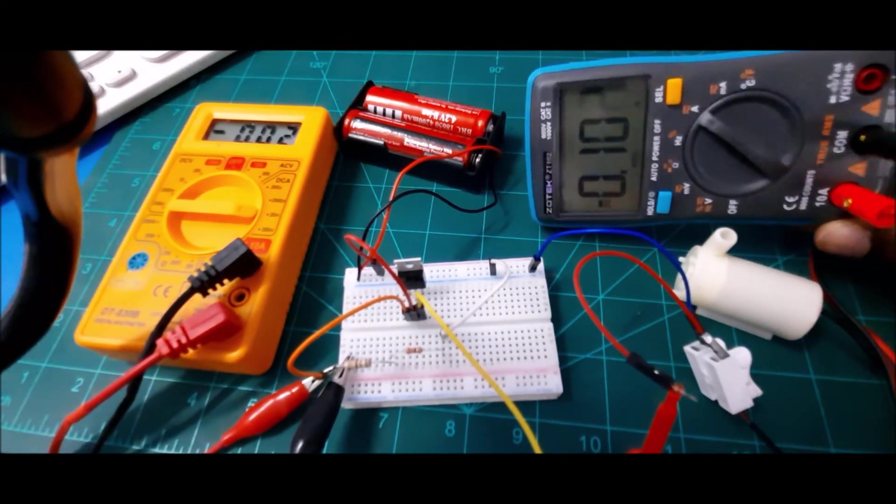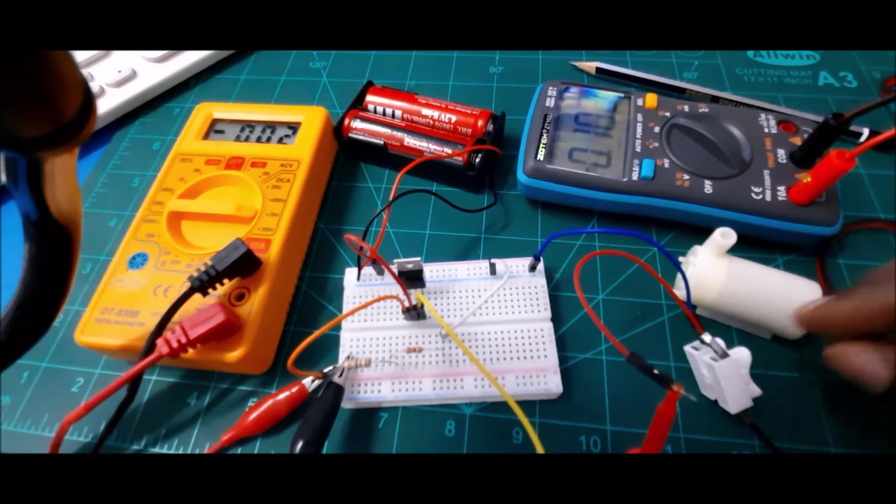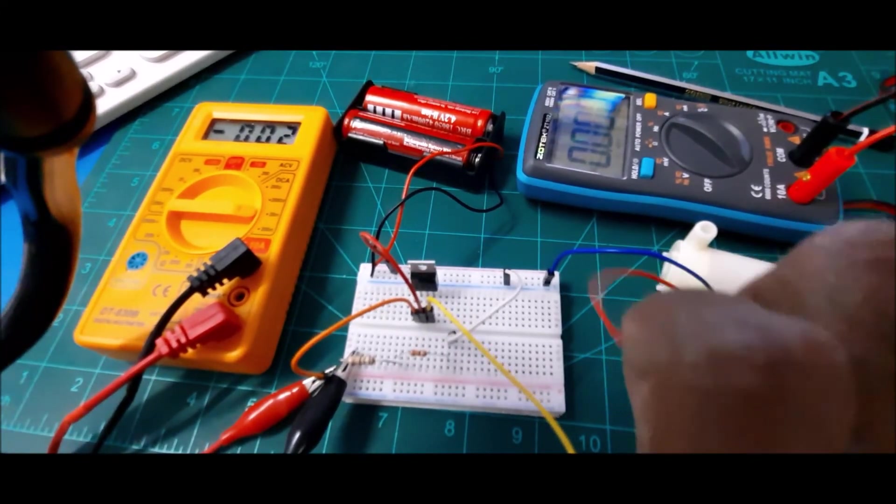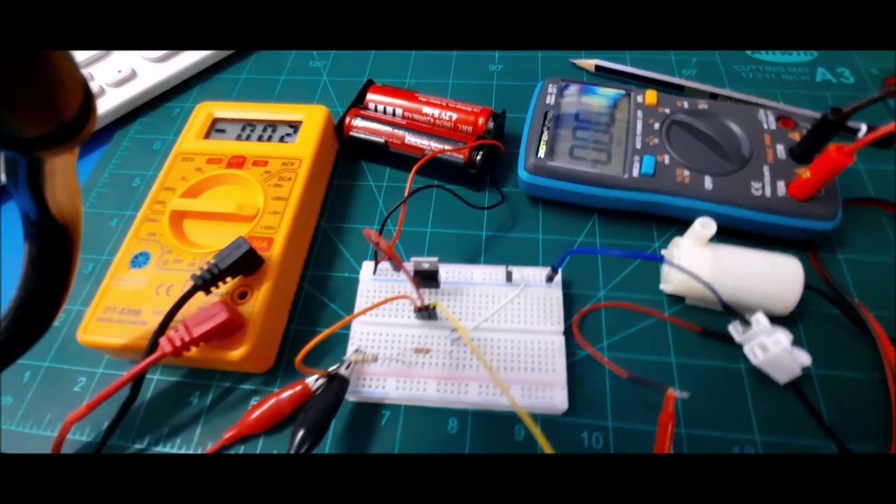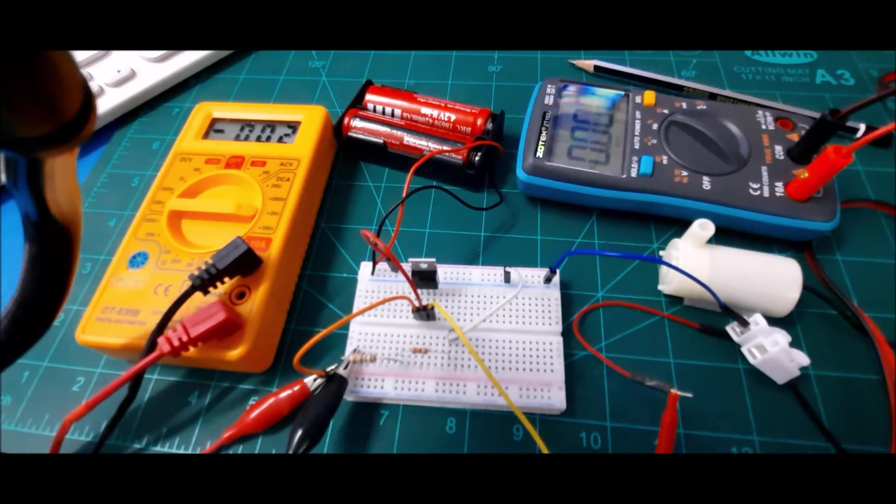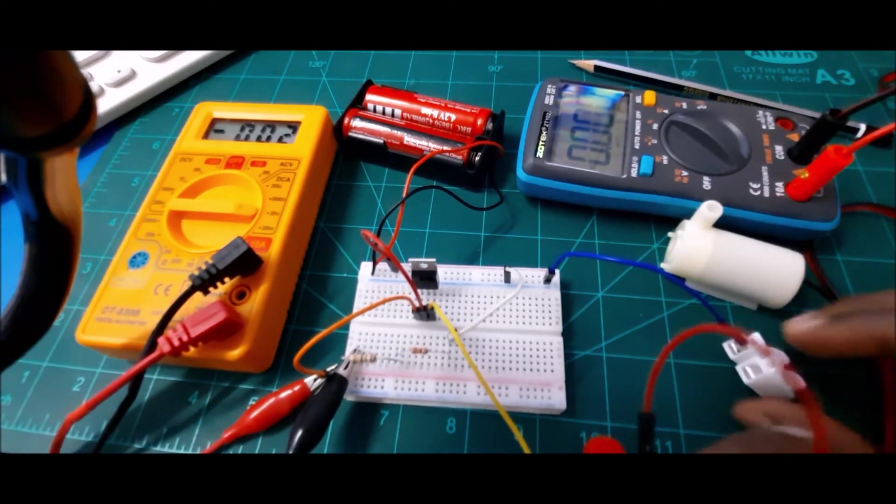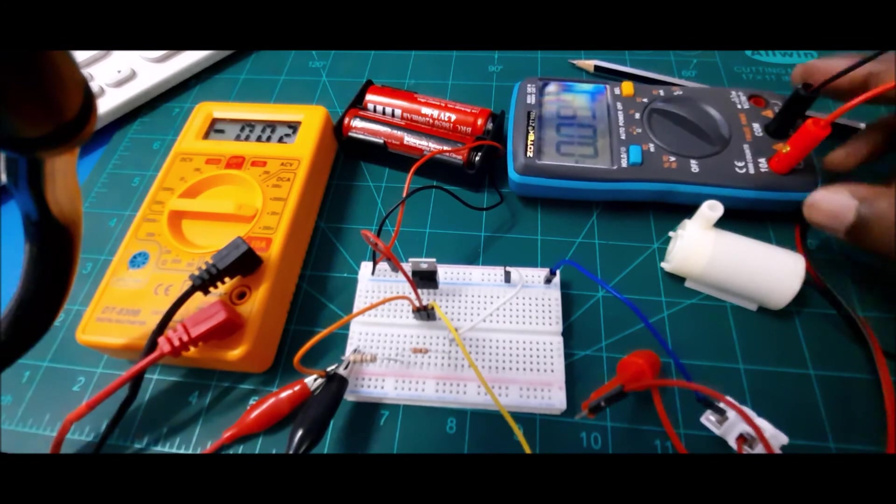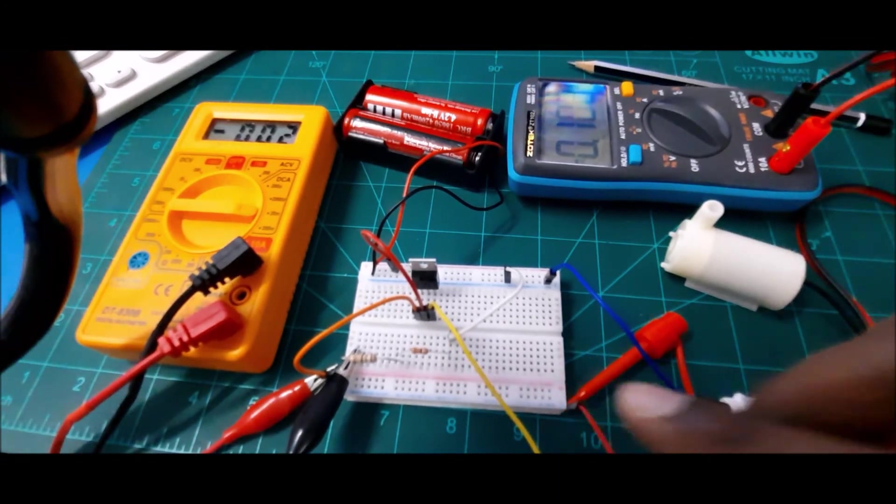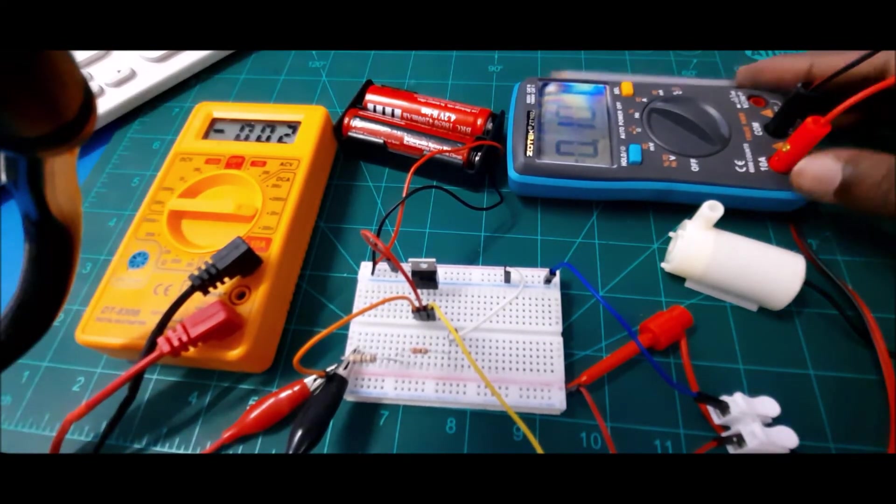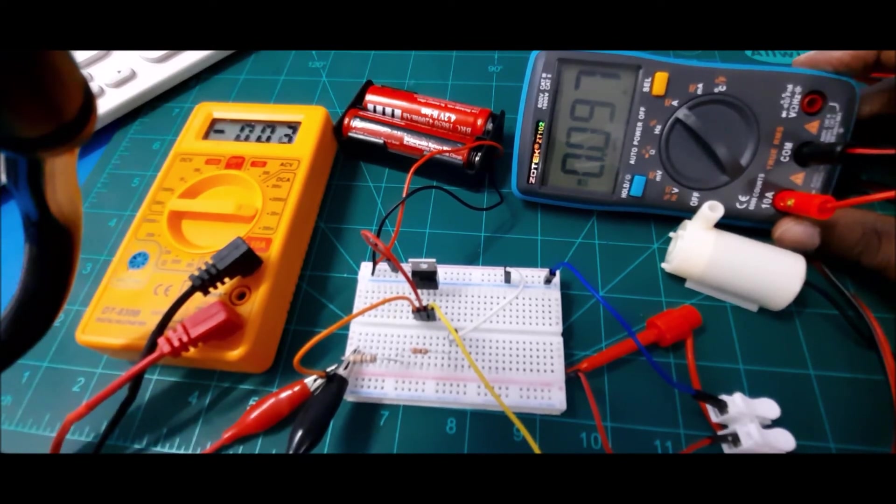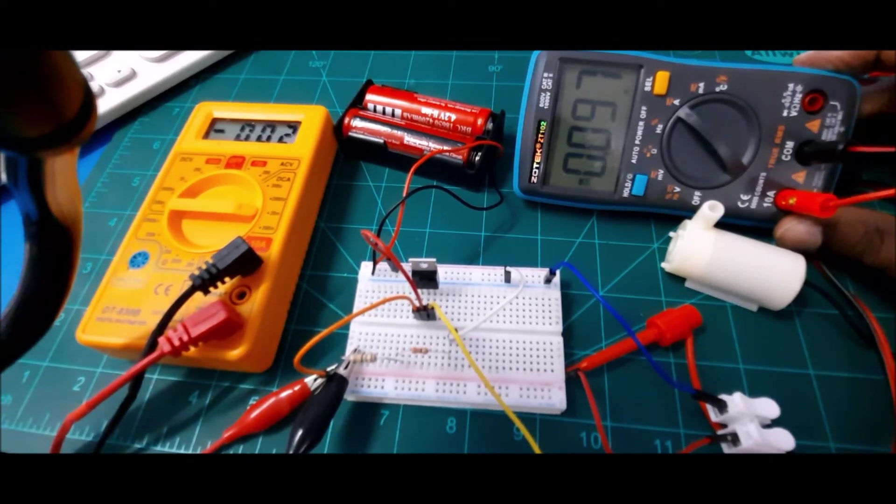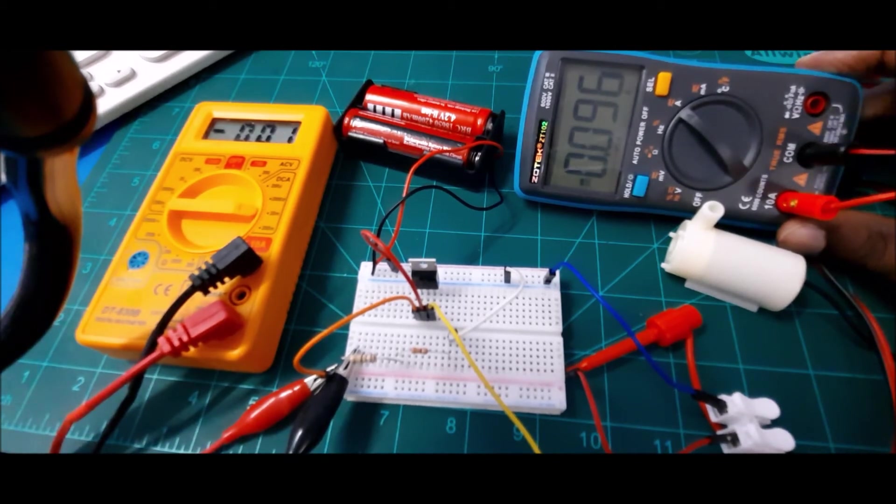This is a clear example of current amplification. On the base side, we only have 0.02, as we can see over here. And over here we have close to 0.1. So that's a gain of 10, which is good. I'm just doing this to show that transistor can be used as a switch and also for current amplification.